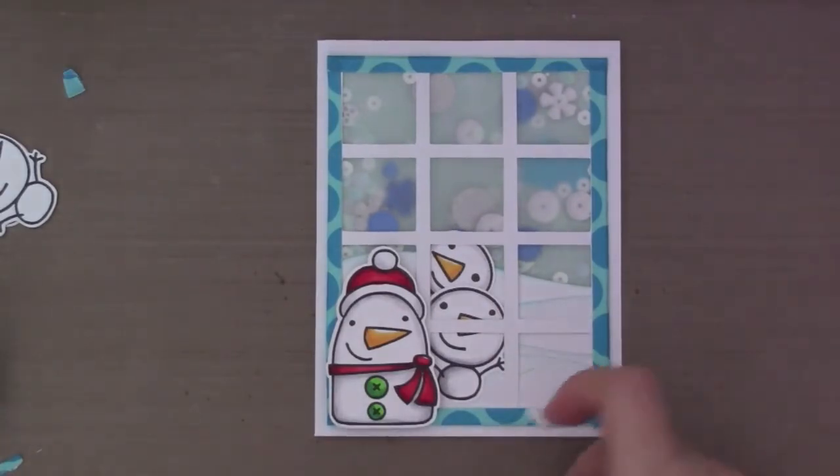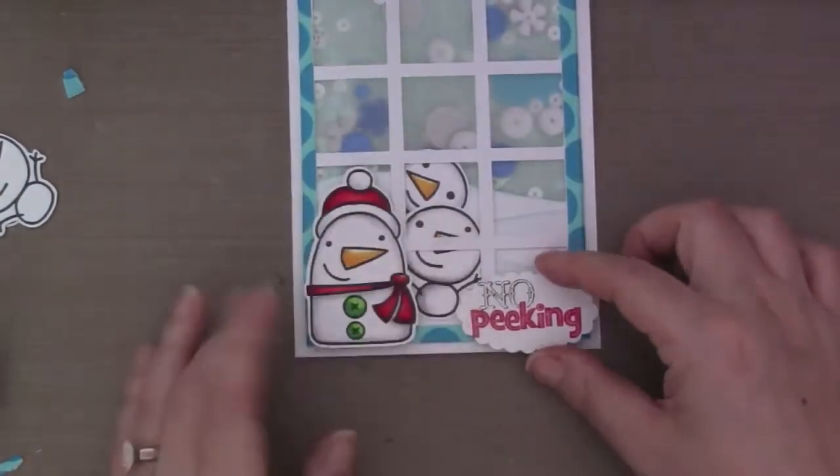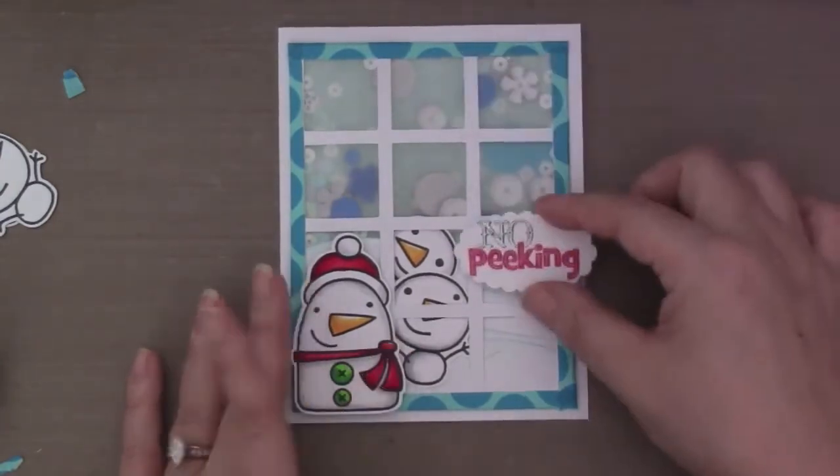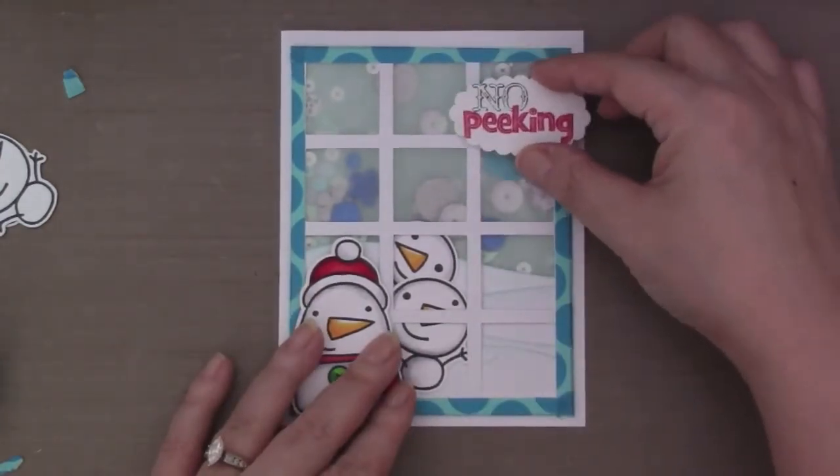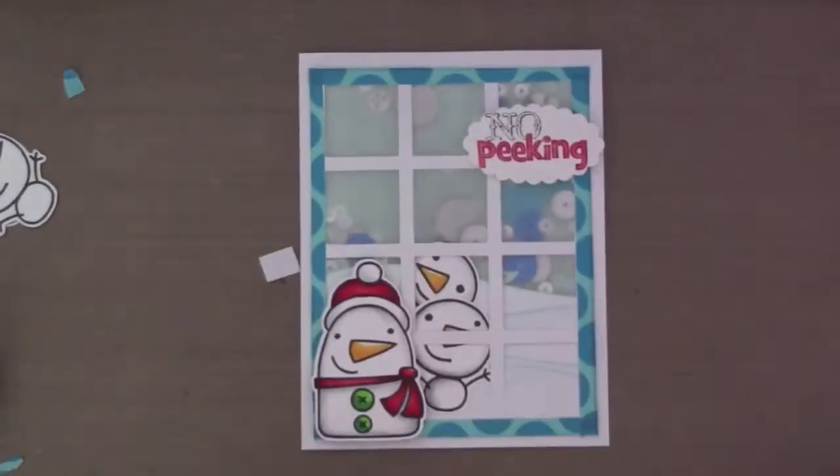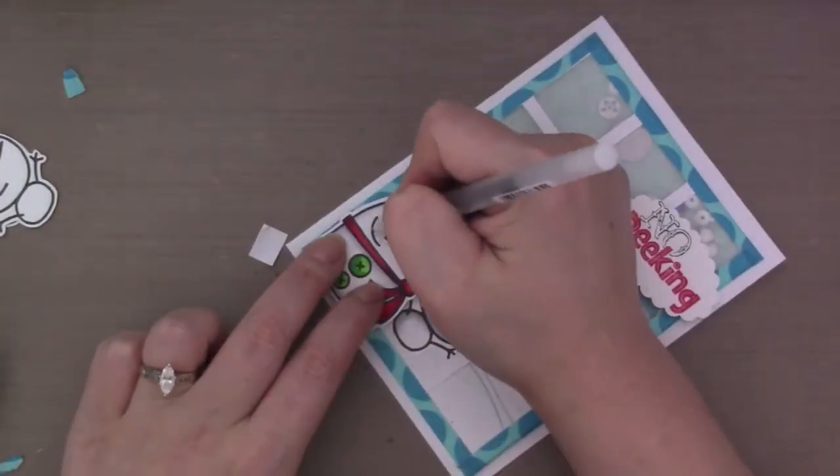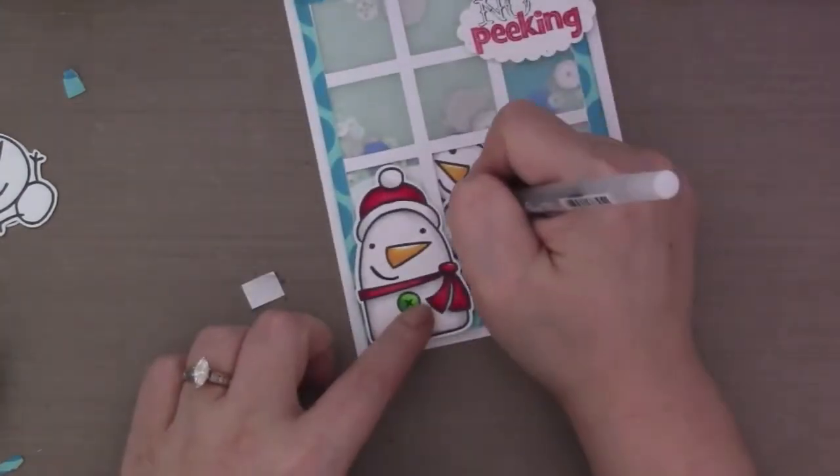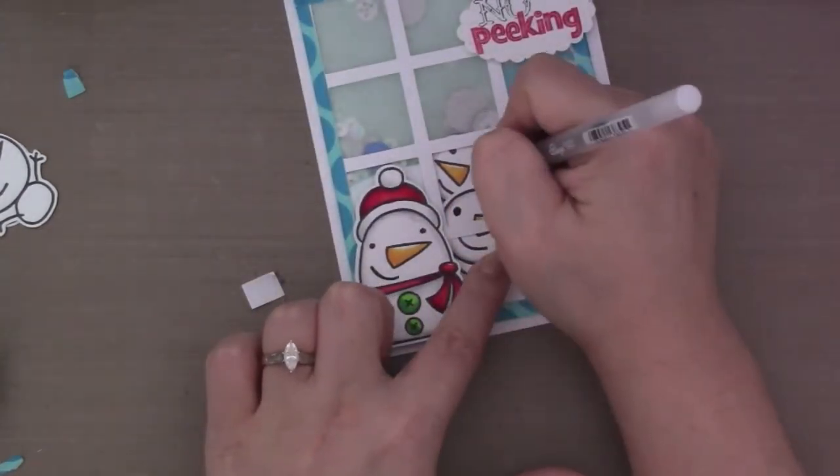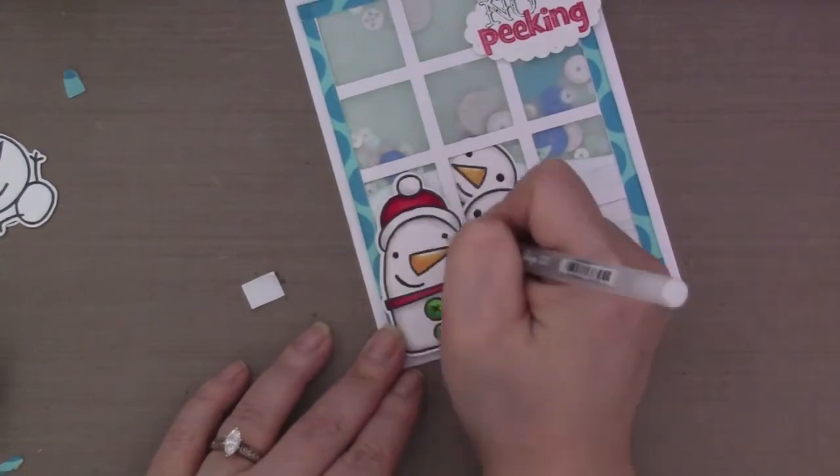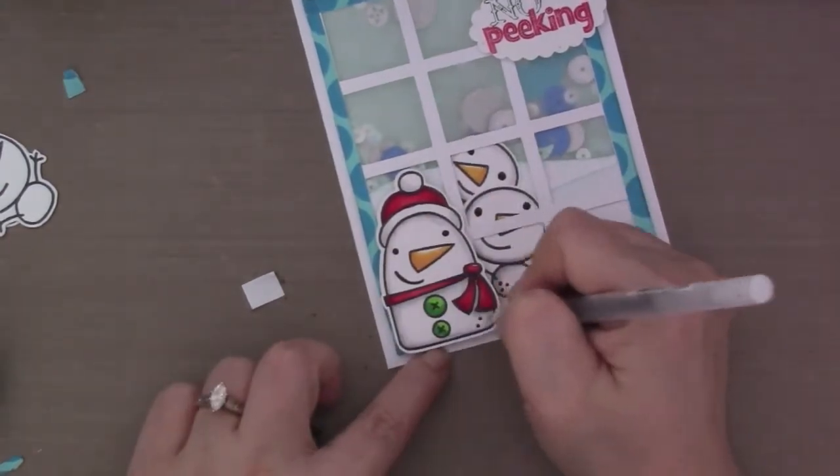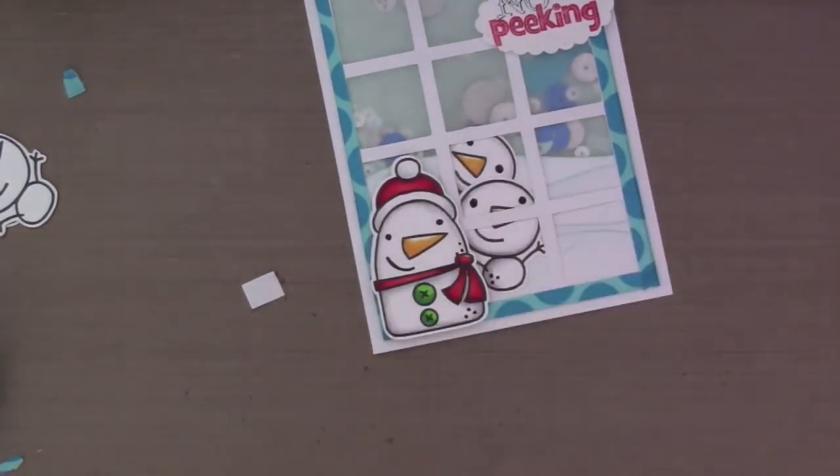Here I stamped out the sentiment that says 'no peeking' in two colors, and I punched it out using the Stampin' Up large scallop oval. And here I'm putting in some details. This is a black Sakura jelly pen. And I'm putting some dots, and then highlighting their eyes and their mouth.